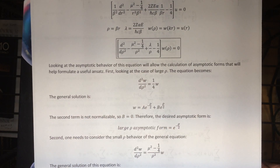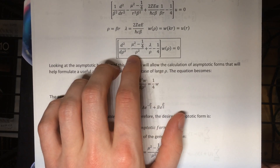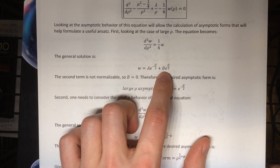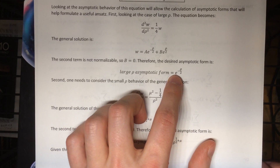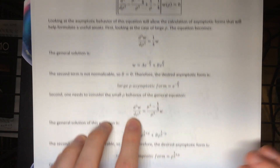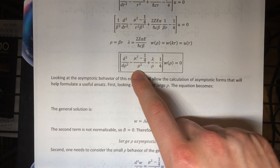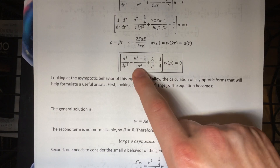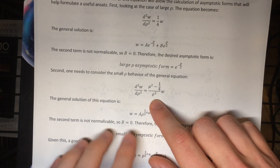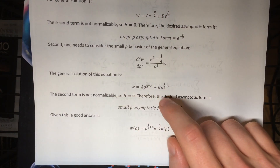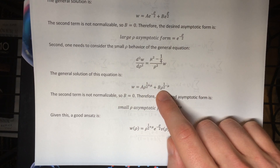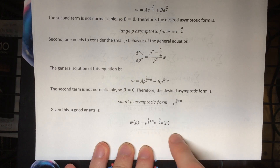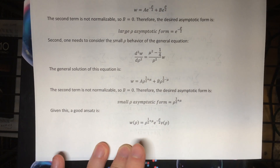The first step is to look at the asymptotic behavior of this equation. In the large rho limit, these two terms go to zero and we're left with this equation. The solutions are trivially easy to see as two exponentials. One is non-normalizable, so we're left with the other, so our desired asymptotic form is simply e to the minus rho over two. If we look at this equation and take the small rho limit instead, this is insignificant — it's a constant — and these two grow, but this one grows way faster so it dominates, and our equation reduces to this. The solutions to this equation are these two, but one is non-normalizable. So our ansatz is the two asymptotic forms times some function v.